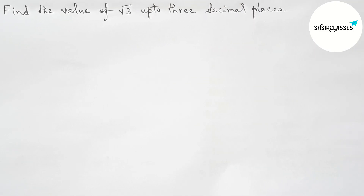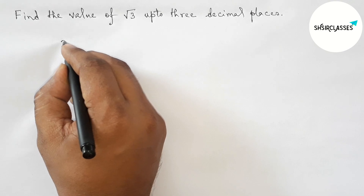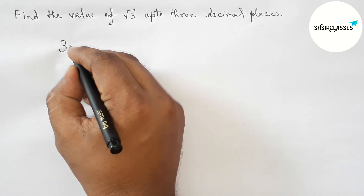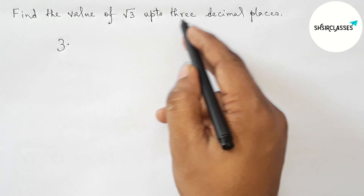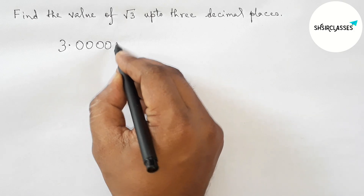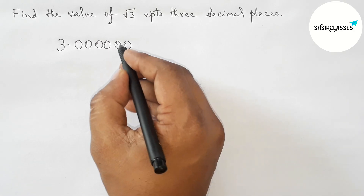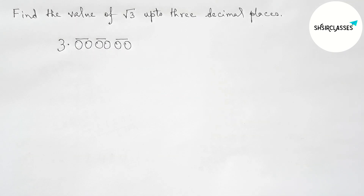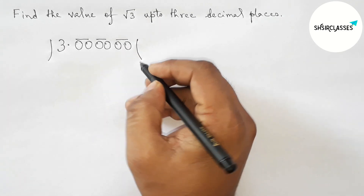First of all, let us solve this problem. Write 3 here, then place the decimal point. We have to find the value of root 3 up to 3 decimal places, so write down 6 zeros, marking them as pairs. We got 3 pairs of zeros, and draw the division line on both sides.